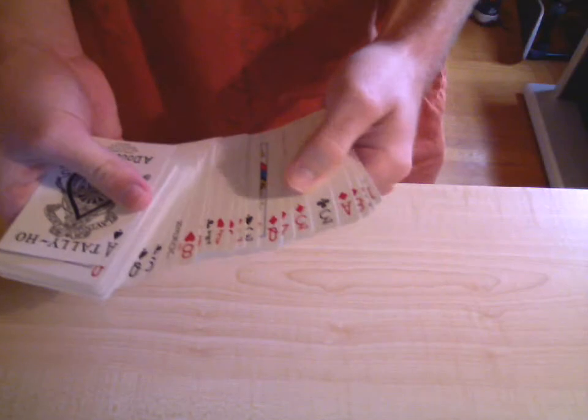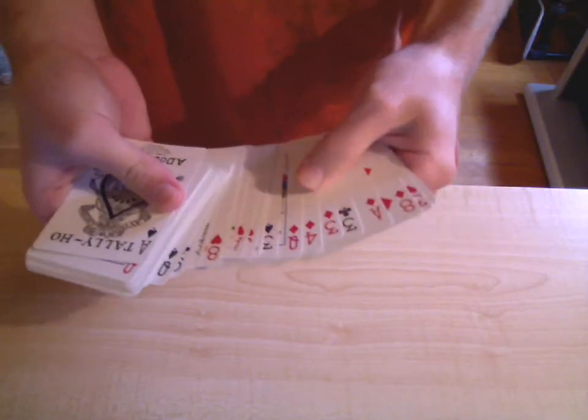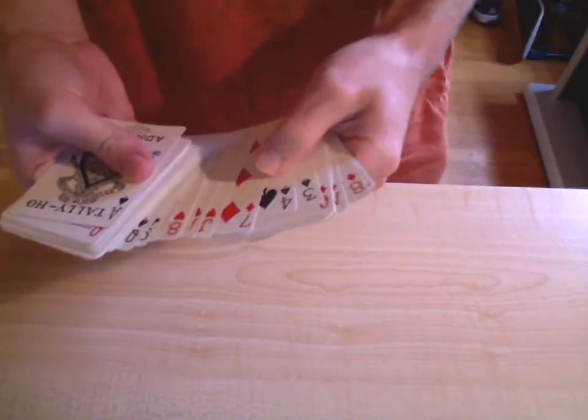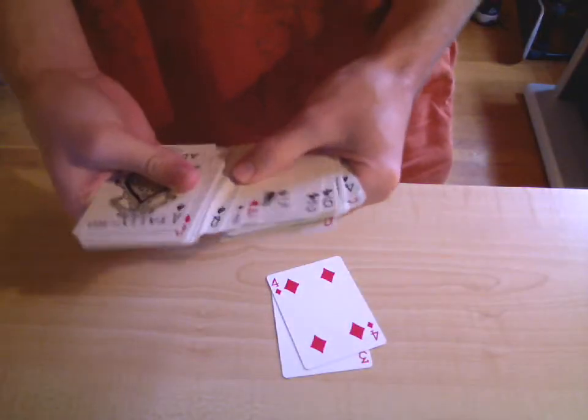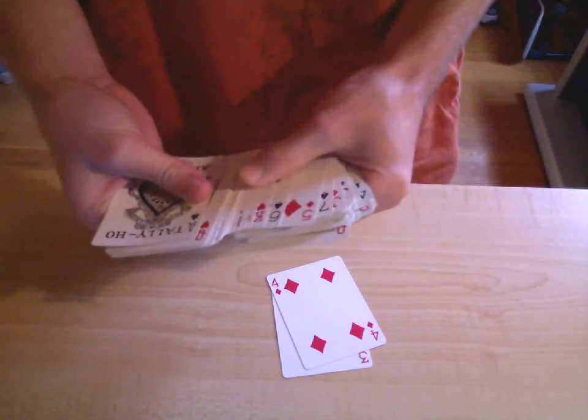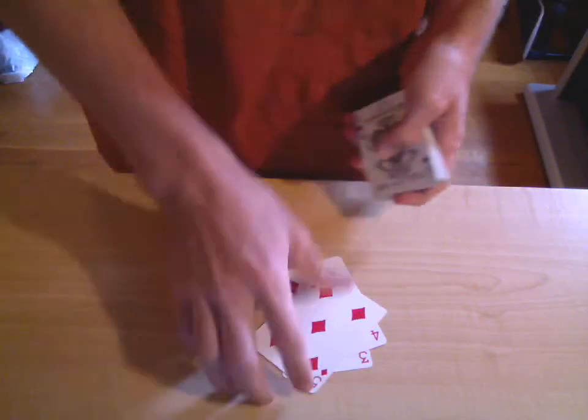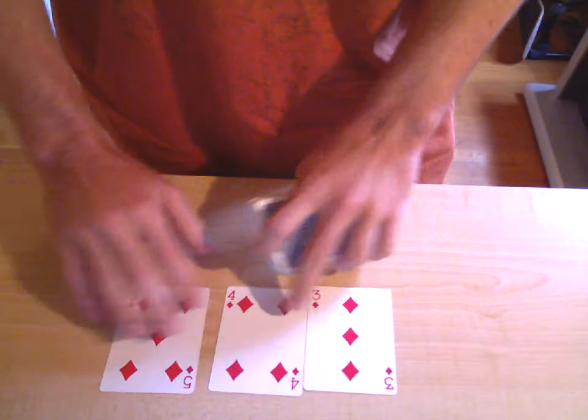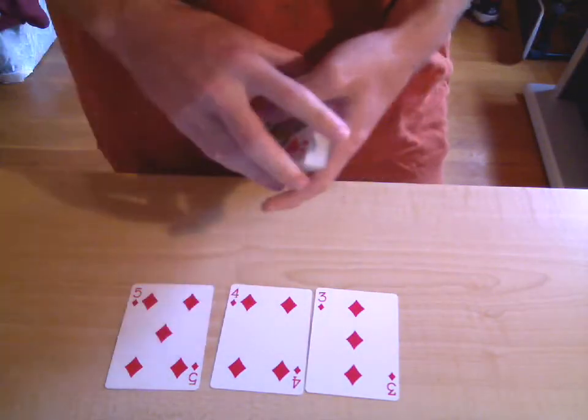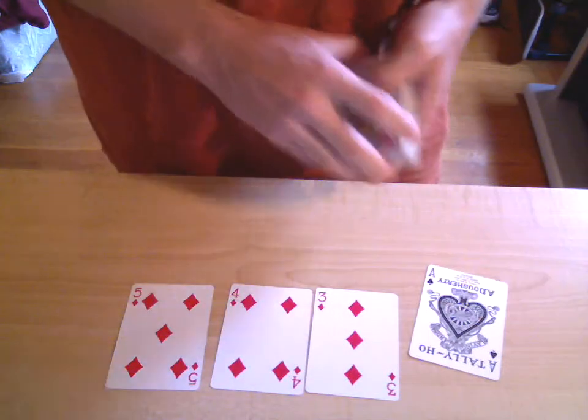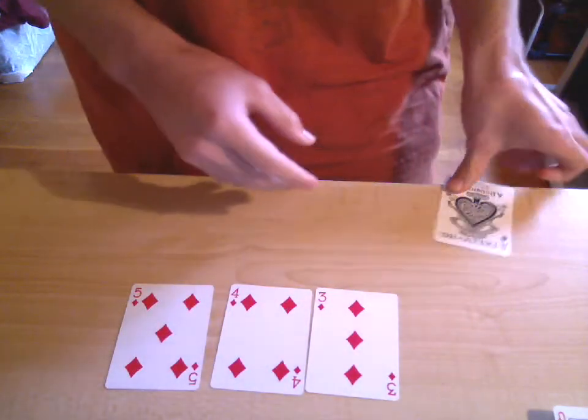So for the sake of the performance I will use 3, 4, 4 and 5 of diamonds. So 3 small red cards. And then also what you need is I want to use the Ace of Spades because that stands out, it's a really big black design.